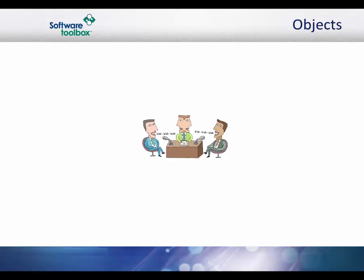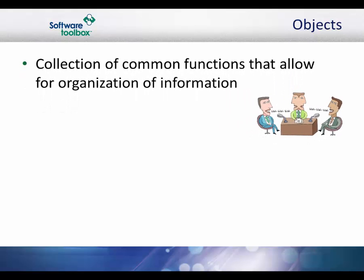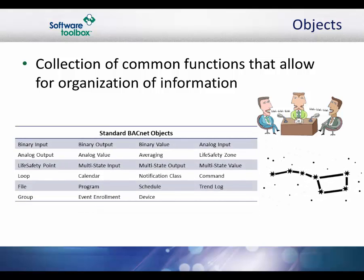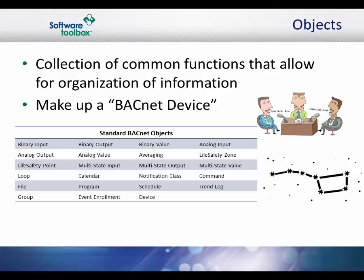Examples are analog and binary inputs and outputs, schedules, control loops, and alarms. This standardized model of a device represents these common functions as collections of related information called objects, each of which has a set of properties that further describe it. This concept allows for organization of information relating to physical inputs and outputs as well as non-physical concepts like software or calculations. Objects may represent single points or logical groupings of points that perform a specific function. Most experts indicate there are 23 standard BACnet objects used in building automation systems. A BACnet device is simply a collection of objects that represents the functions actually present in a given real device.